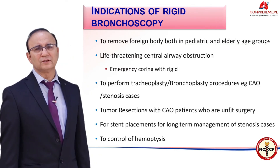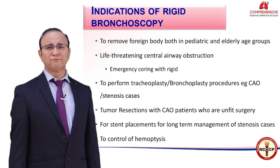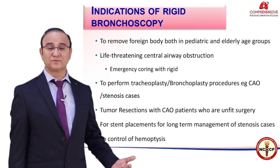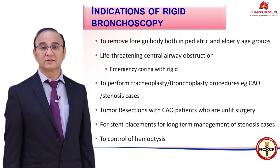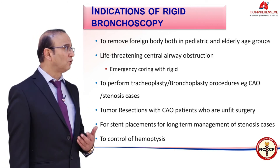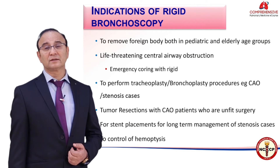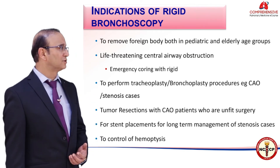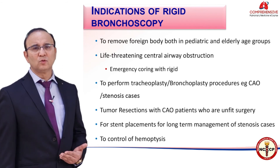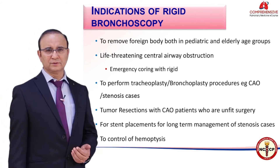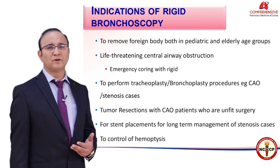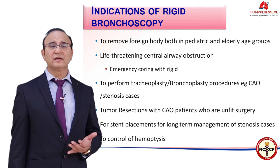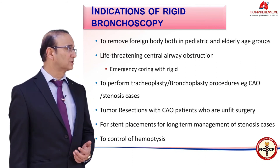The indications of rigid bronchoscopy include foreign body removal, which has been performed preferably with the rigid scope for many years. It remains indicated for removing foreign bodies in both pediatric and elderly age groups. It also has a role in life-threatening central airway obstruction, and to perform tracheoplasty or bronchoplasty in patients with tracheal or bronchial stenosis.